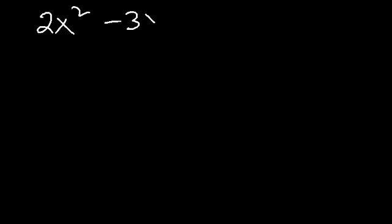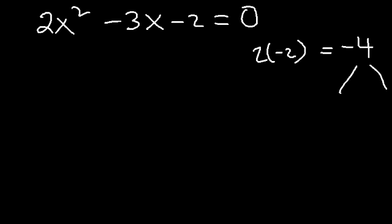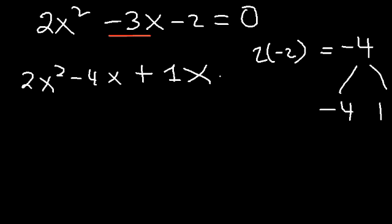What if we have a trinomial where the leading coefficient is not 1, like 2x squared minus 3x minus 2, with no GCF to take out? Multiply the leading coefficient by the constant term: 2 times negative 2 equals negative 4. Find two numbers that multiply to negative 4 but add to negative 3: that's negative 4 and positive 1. So we replace the middle term with negative 4x and positive 1x, then factor by grouping.